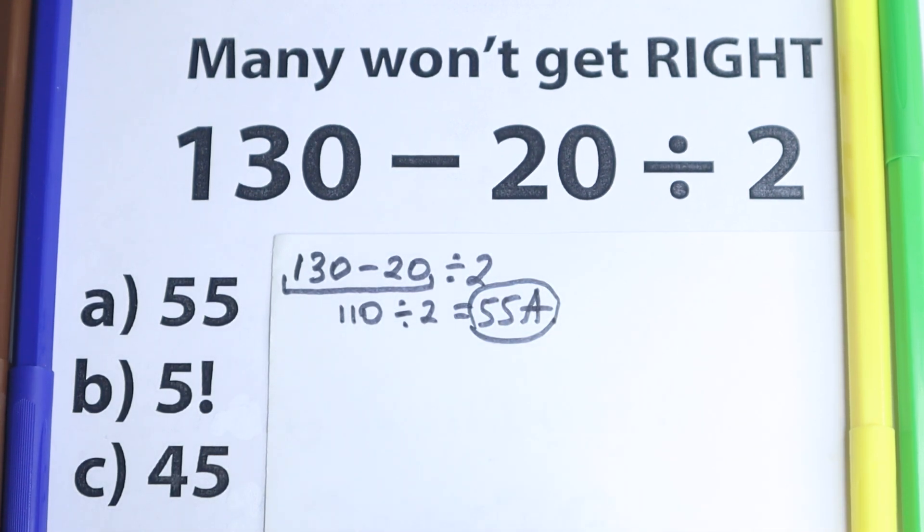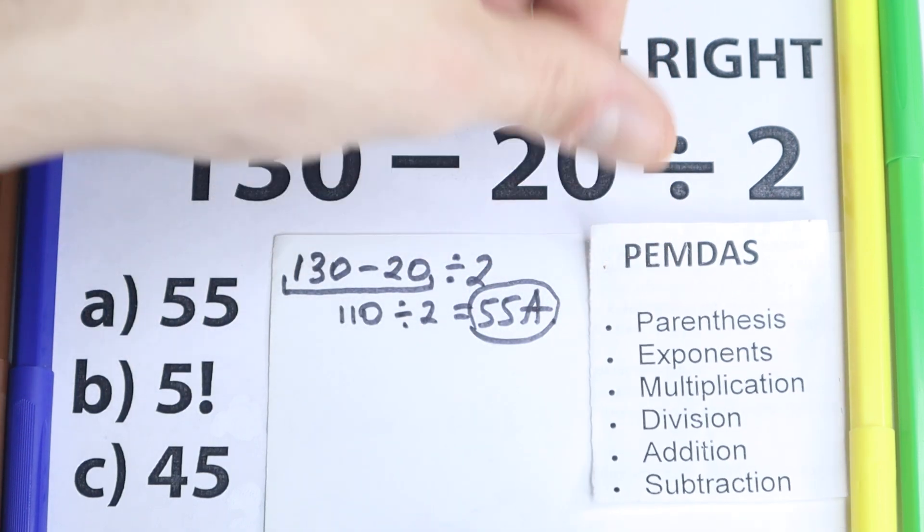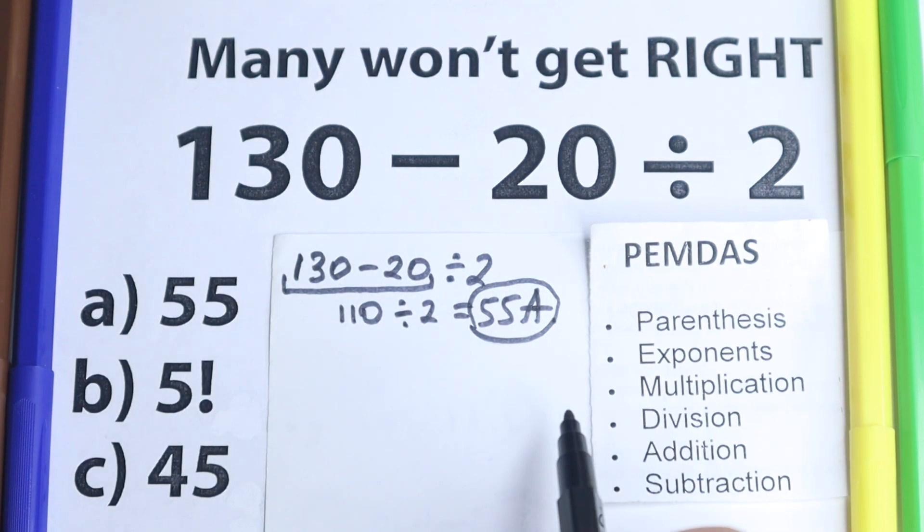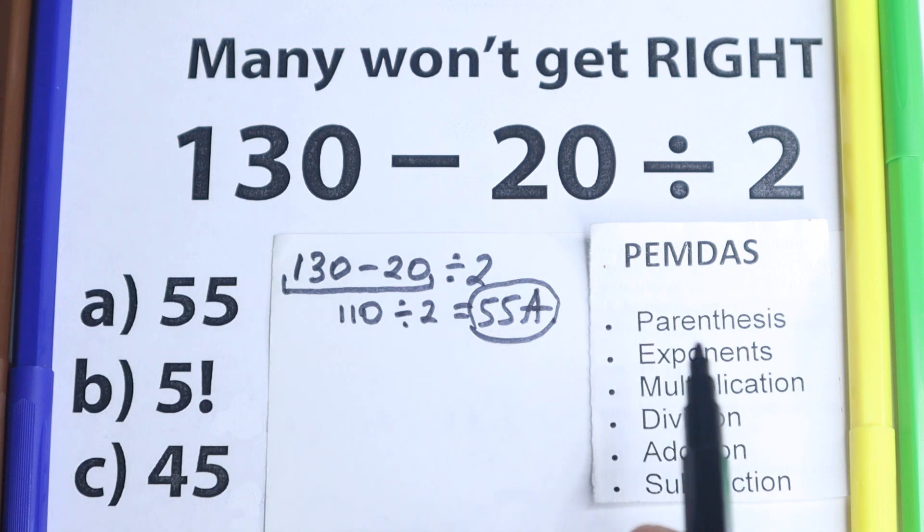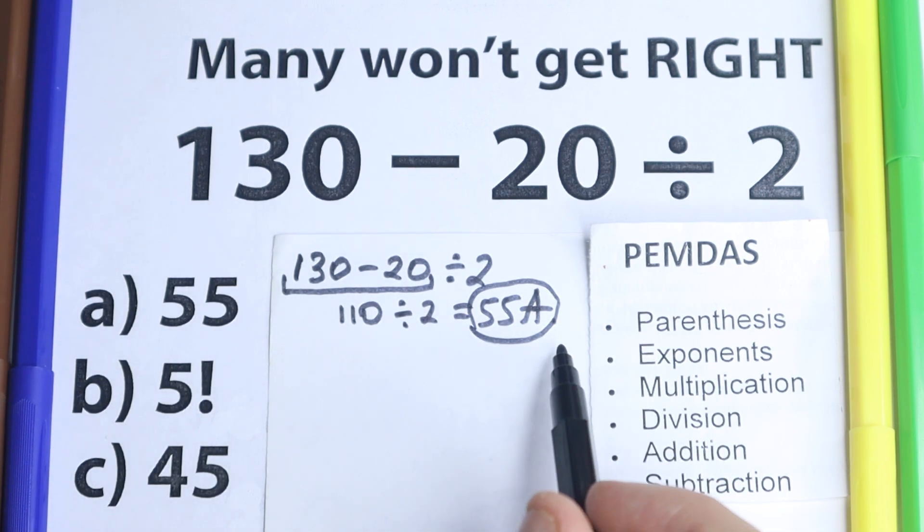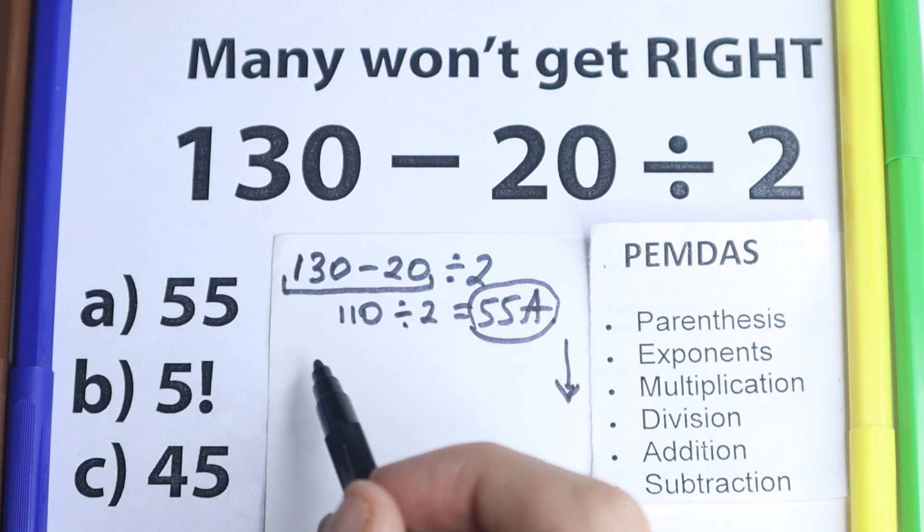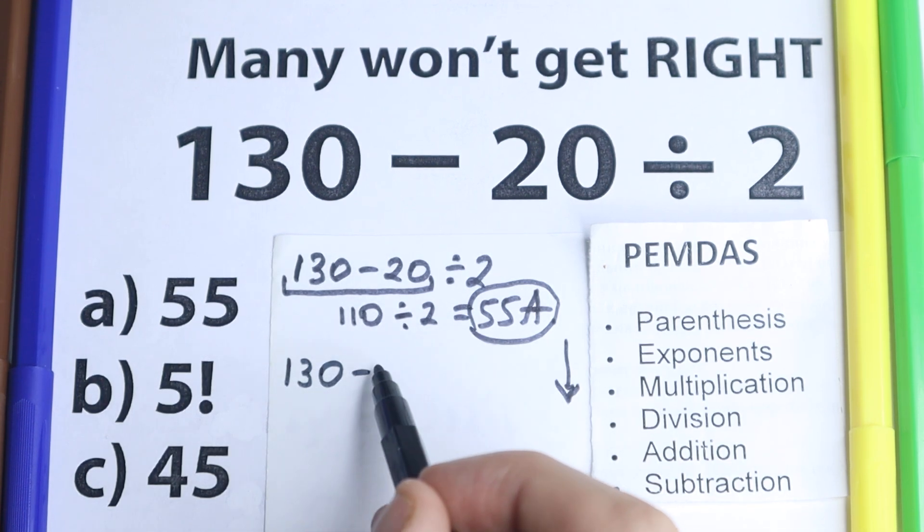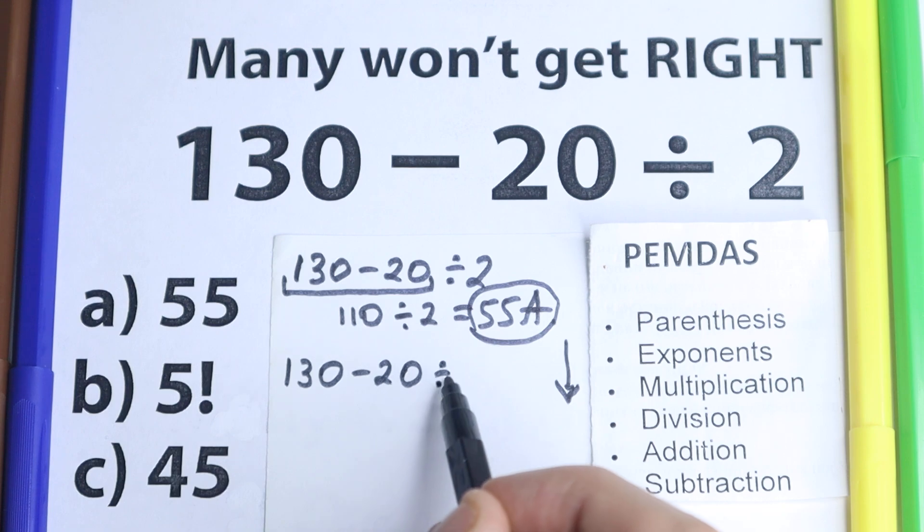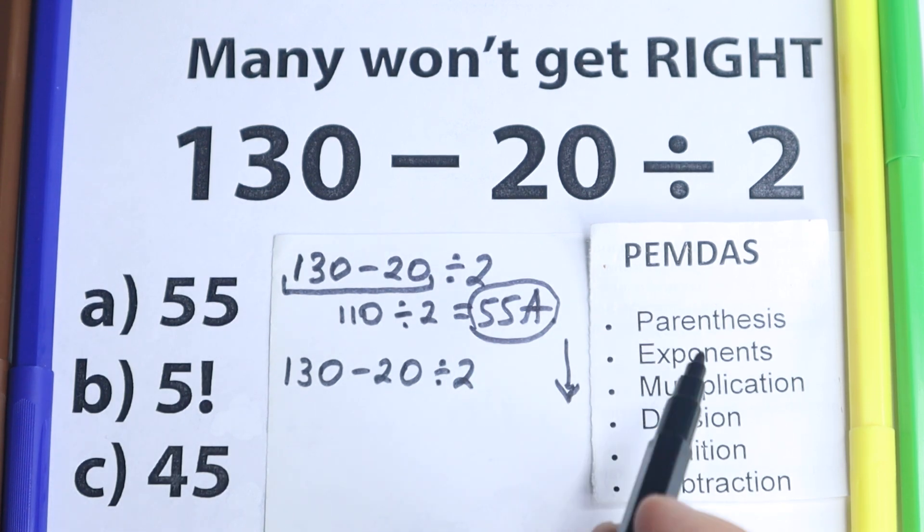But then I show them this order of operations. It doesn't matter what order of operation you select. I prefer PEMDAS, or it doesn't matter if you like BODMAS. Each of these order of operations is really interesting and really good. In my case, I prefer PEMDAS. Let's look at this PEMDAS once more. We have 130 minus 20 divided by 2.